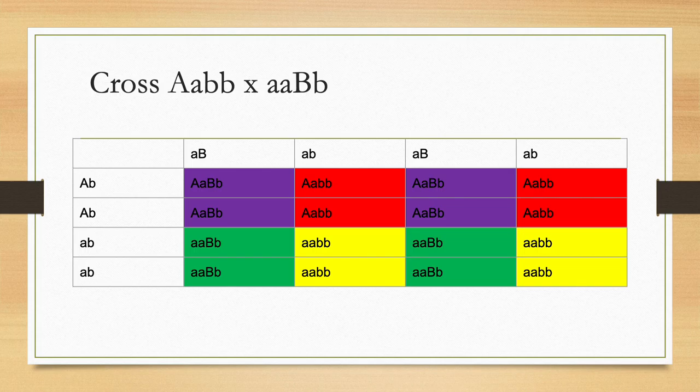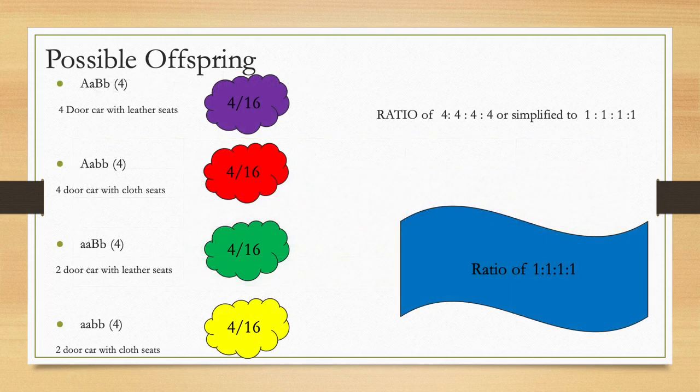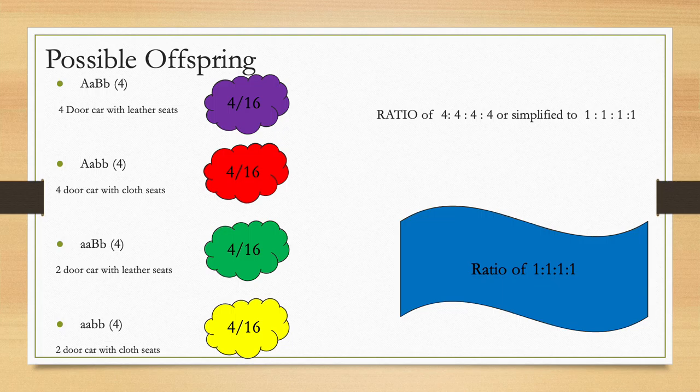In the cross of these new parents, the purple offspring are four-door cars with leather seats. The red offspring are four-door cars with cloth seats. The green offspring are two-door cars with leather seats, and the yellow offspring are two-door cars with cloth seats. This is a 4 to 4 to 4 to 4 ratio.